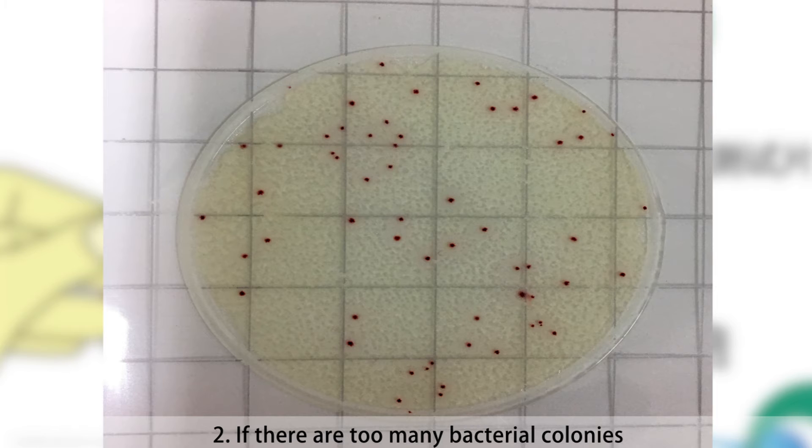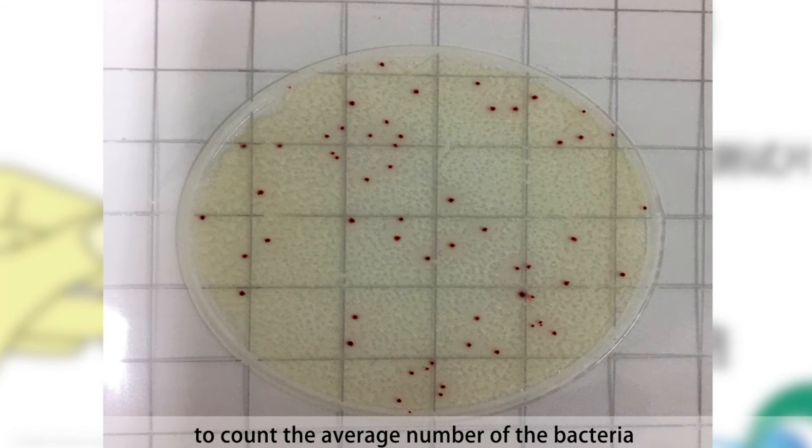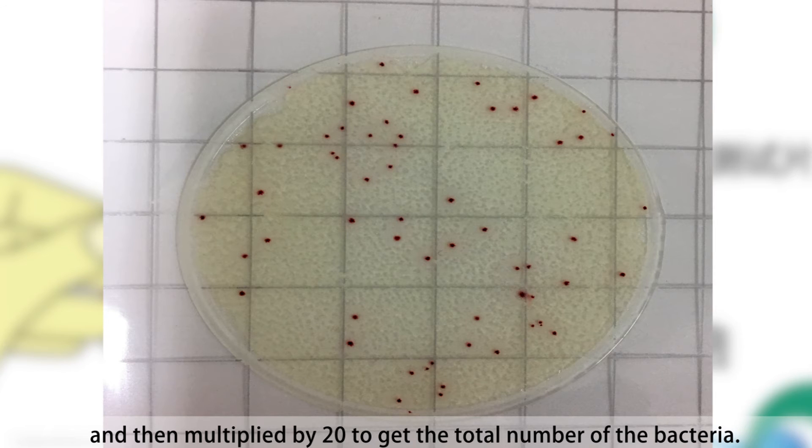Second, if there are too many bacterial colonies, please select several representative small squares to count the average number of bacteria and then multiply it by 20 to get the total number of bacteria.